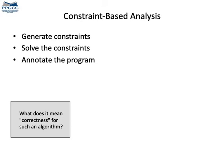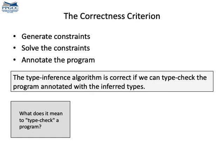First, we generate constraints out of the program. Then, we solve these constraints using an algorithm called unification. And finally, we annotate the program with the correct types that we have inferred. And we shall say that the type inference algorithm is correct if we can type check the program annotated with the inferred types.